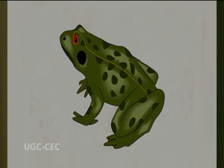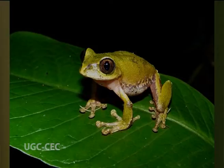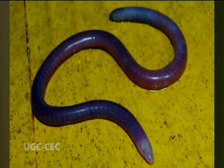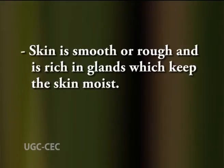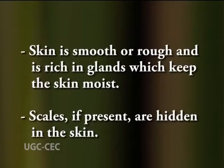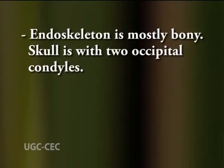Body is divisible into head and long trunk. Neck and tail may be present or absent. Limbs are tetrapodous pentadactyl type and digits are clawless. Some amphibians are limbless. Skin is smooth or rough and is rich in glands which keep the skin moist. Scales if present are hidden in the skin. Endoskeleton is mostly bony.